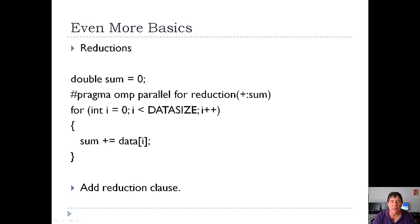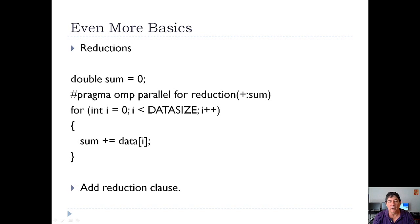There's a way to handle this with OpenMP, and that's with the reduction clause. You say reduction, then plus colon sum. The plus means we're going to do a reduction for plus operations, colon, and then we specify the sum variable. Behind the scenes, OpenMP will create as many sum variables as you have threads, add to that copy on a per-thread basis, and then at the end add them all together. So to solve that problem, you add a reduction clause.